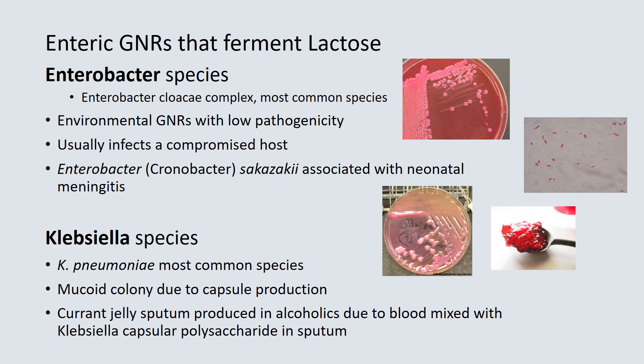Other gram-negative rods that ferment lactose include Enterobacter and Klebsiella. The most important Enterobacter species is cloacae — an environmental gram-negative rod with very low pathogenicity that usually only infects a compromised host. A recently renamed species, Cronobacter sakazakii, has been strongly associated with neonatal meningitis. Klebsiella pneumoniae, the most important Klebsiella species, usually produces a very mucoid colony due to capsule production, and in alcoholics with pneumonia, it can produce what is known as currant jelly sputum.